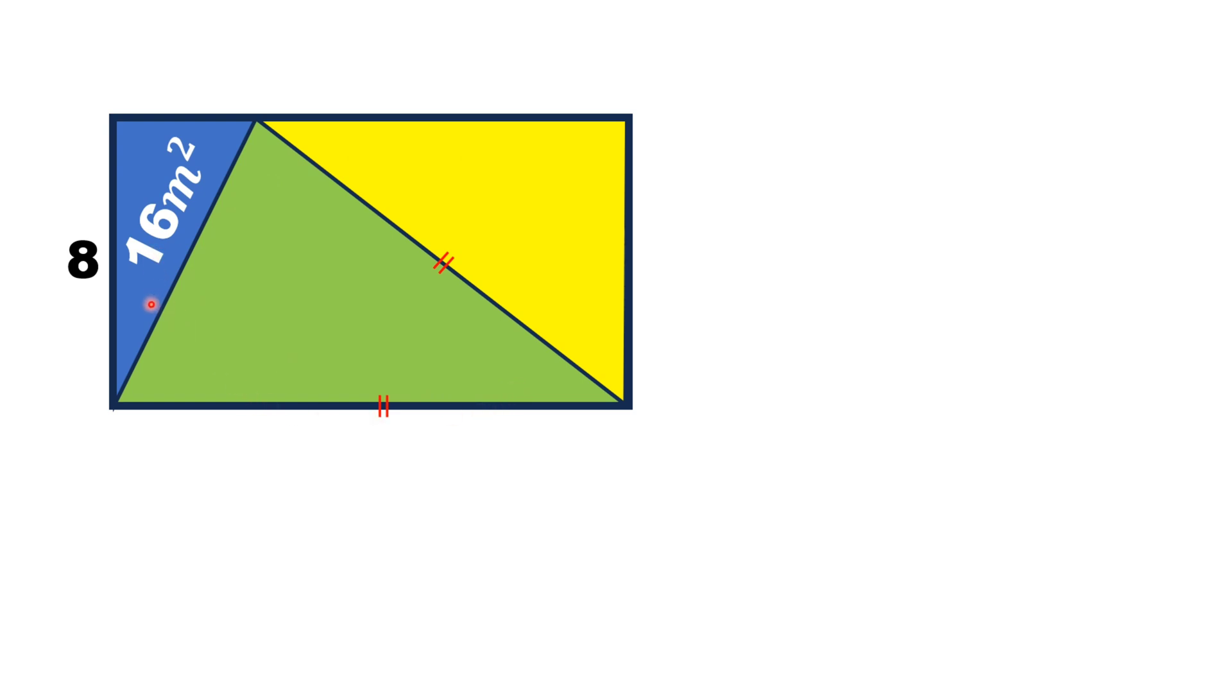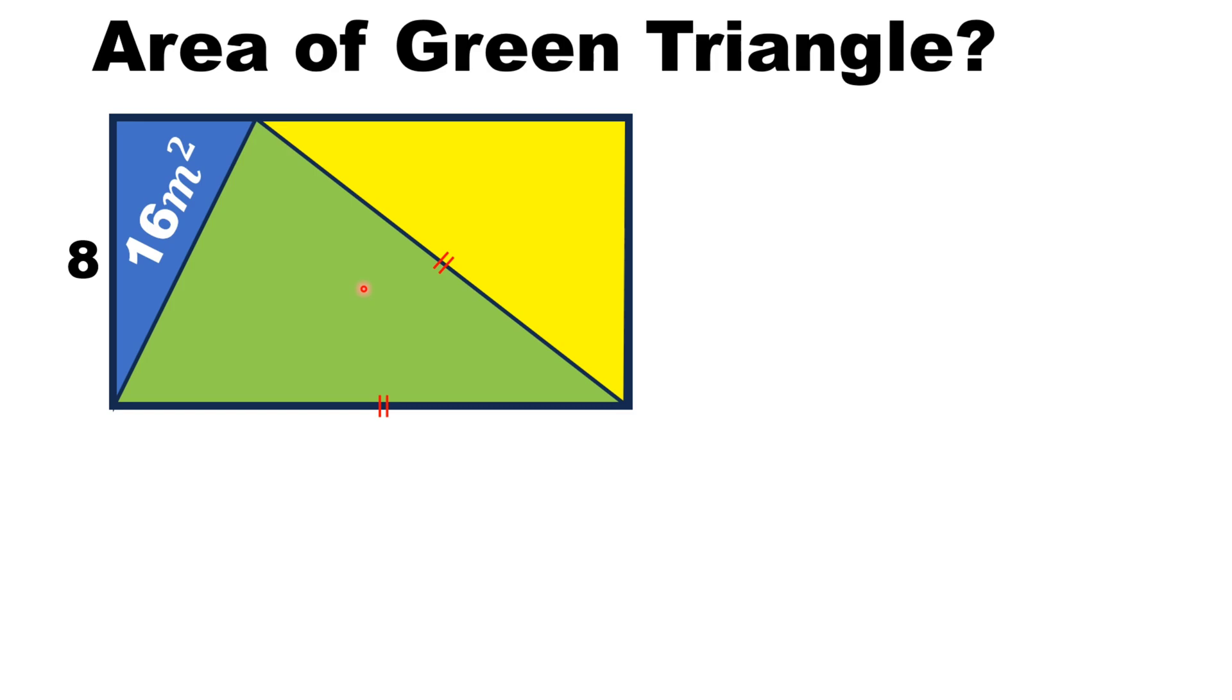Moreover, the area of the blue shaded triangle is 16 meters square. So, by this limited data, we have to find the area of the green triangle.